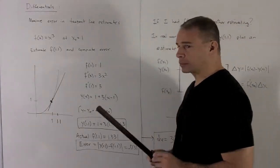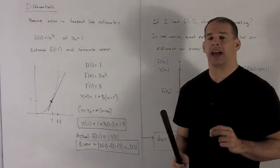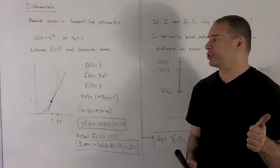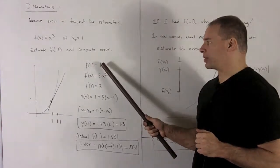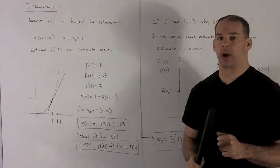So what do we have? What do I need for a tangent line? I need a point and a slope. Our point here is just going to be given by evaluating the function at 1. That's going to be 1 cubed which gives me 1. So my point is (1, 1).